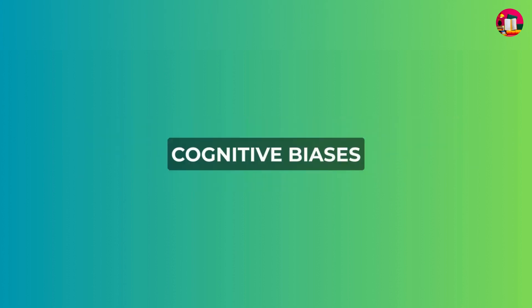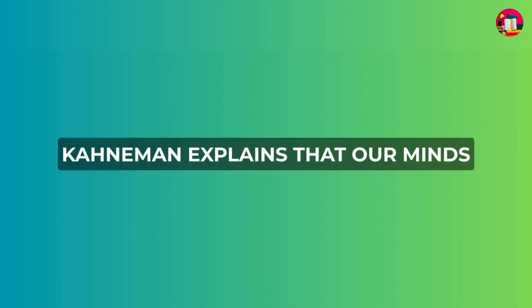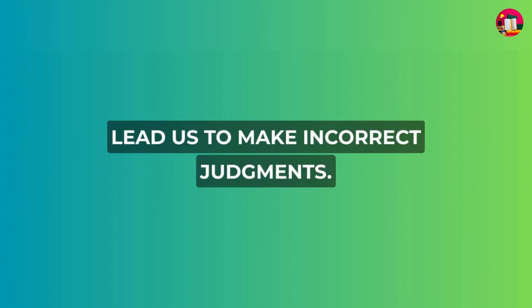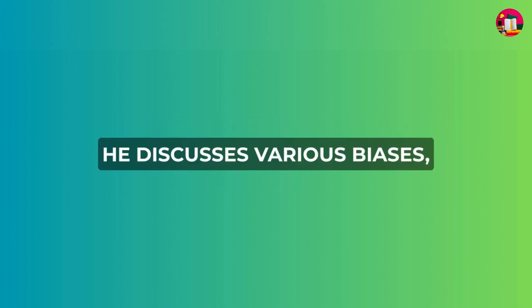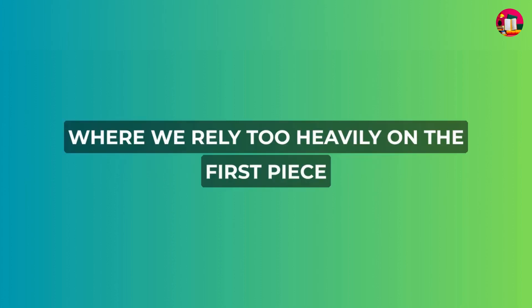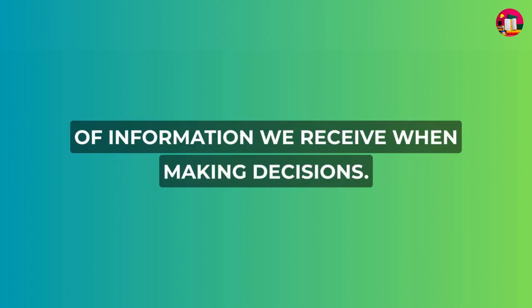Cognitive biases. Kahneman explains that our minds are prone to biases — systematic errors that lead us to make incorrect judgments. He discusses various biases, such as the anchoring bias, where we rely too heavily on the first piece of information we receive when making decisions.